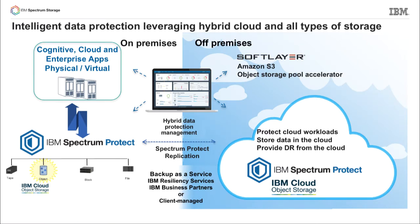This slide gives a good overview of the different ways that Spectrum Protect allows you to store back-end data. Traditionally, Spectrum Protect supported an on-premise solution with tape and/or random access disk as storage repositories. But over the last several releases, we have added object storage to our repository. We've already done a video showing IBM Cloud Object Storage implemented as an on-premise solution or appliance.